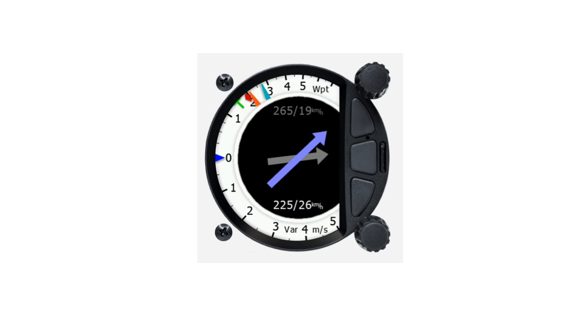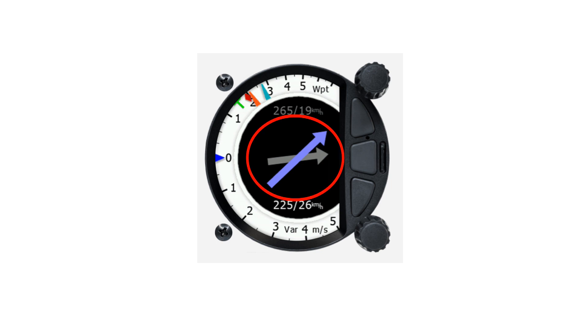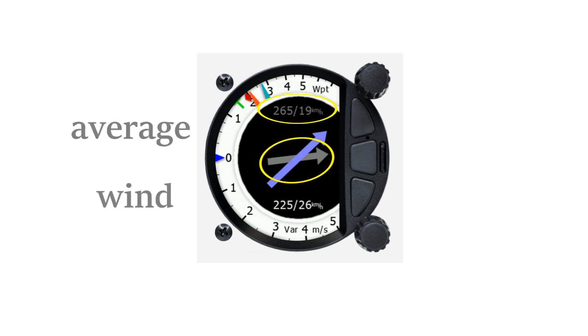On the HOG page you will find a gray and a blue arrow. The gray one presents the average wind and the blue one the current wind.